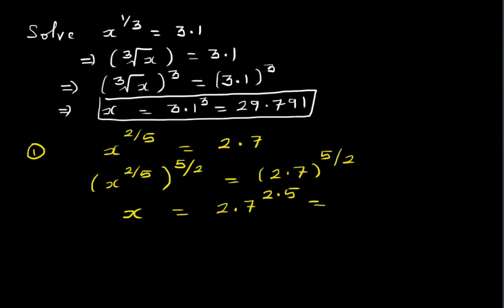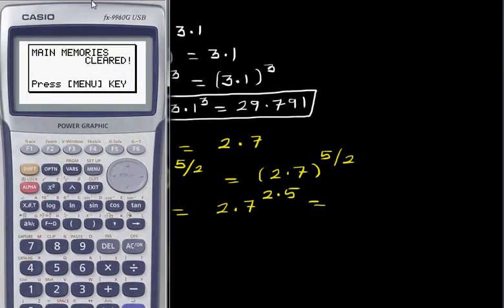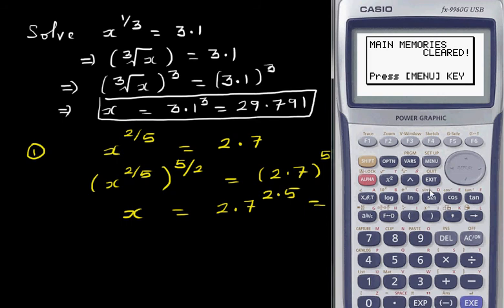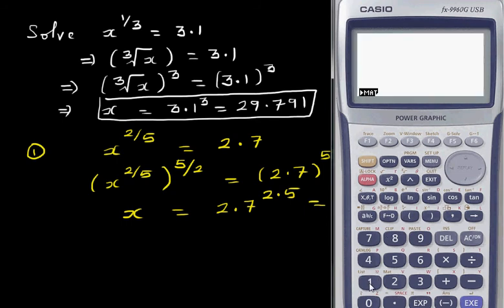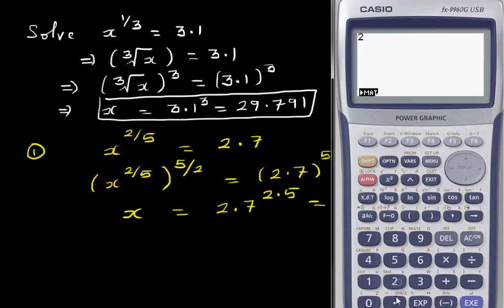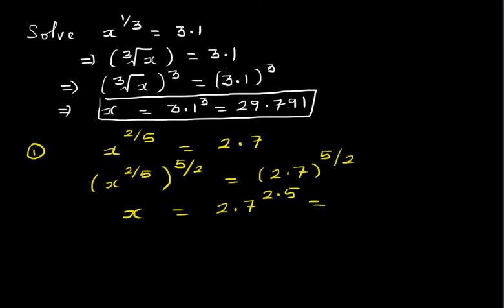Now to check this, it's better to use the graphic calculator because you can save that as a letter. So if you go 2.7 raised to 2.5, I want to save this as alpha A. Now the calculator remembers this as this number. If you press alpha A it will give you that number, so it is 11.98 in 2 decimal places.